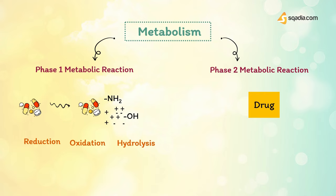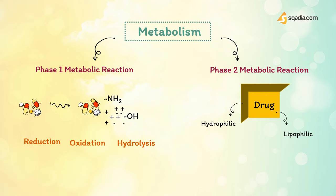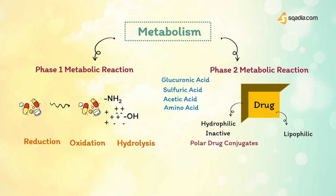Phase 2 metabolic reactions consist of conjugation reactions. If the metabolite from phase 1 metabolism is sufficiently polar, it can be excreted by the kidneys. However, many phase 1 metabolites are still too lipophilic to be excreted. A subsequent conjugation reaction with an endogenous substrate — such as glucuronic acid, sulfuric acid, acetic acid, or an amino acid — results in polar, usually more water-soluble compounds that are often therapeutically inactive. The highly polar drug conjugates are then excreted by the kidney or in bile.